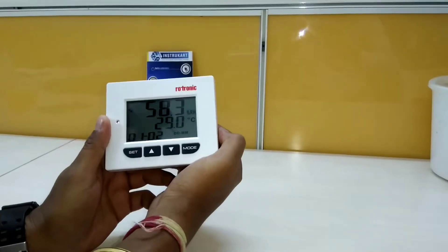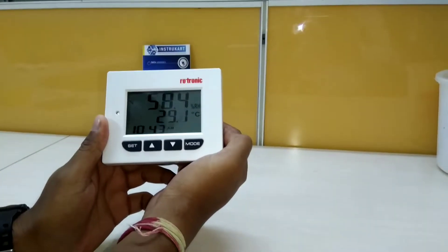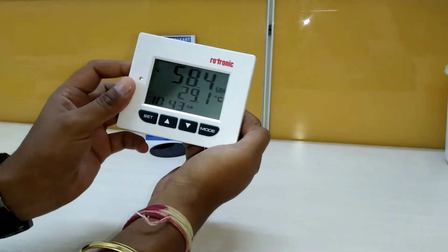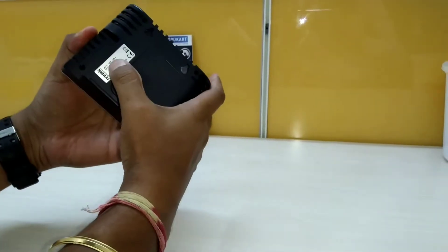Hi, I am going to walk you through this hygrometer which is from Rotronic Make and the model number is HT1.